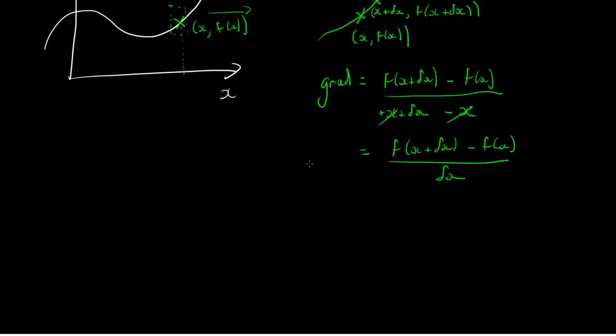Basically, all we're doing here is we're making this delta x value smaller and smaller and smaller, so that this gradient value becomes closer and closer and closer to the exact one.